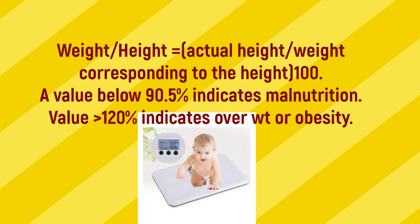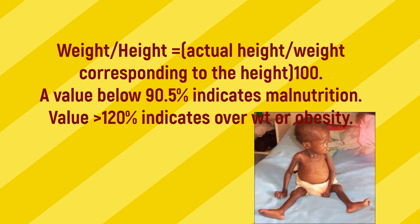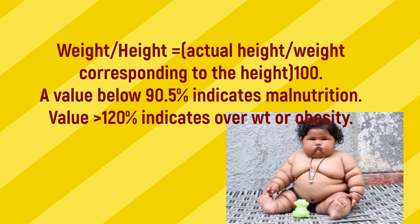Weight per height = (actual weight ÷ weight corresponding to the height) × 100. A value below 90.5% indicates malnutrition. A value greater than 120% indicates overweight or obesity.